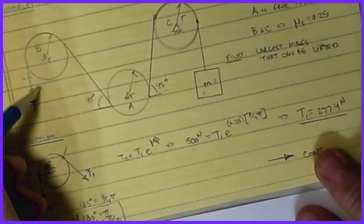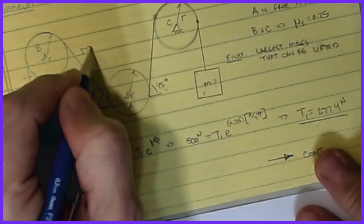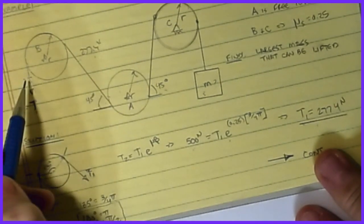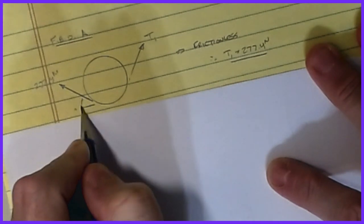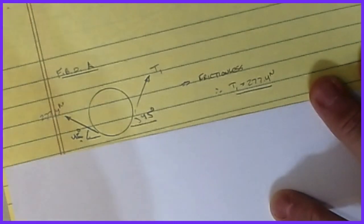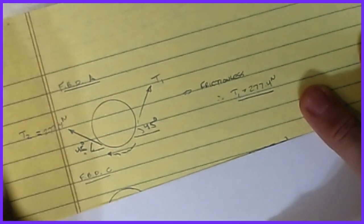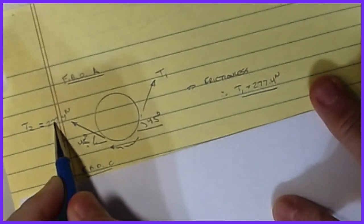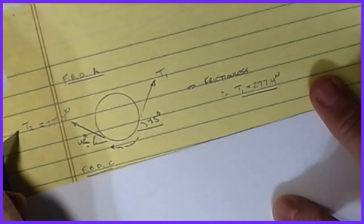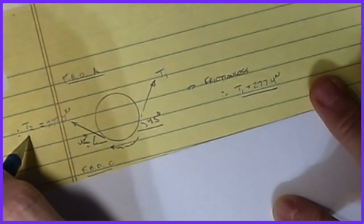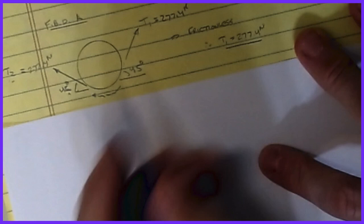Now the tension limit heading into pulley A is 277.4 N — if this is exceeded, the belt at B would break. Since pulley A is frictionless (μ = 0), T2 = T1 through it, so both sides equal 277.4 N. That value then becomes the driving T2 entering pulley C.